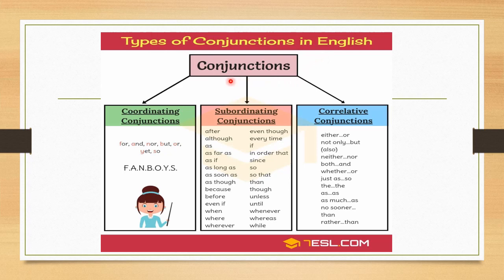The three types of conjunctions in English are: coordinating conjunctions, subordinating conjunctions, and correlative conjunctions. To remember coordinating conjunctions, remember the word FANBOYS — F for 'for', A for 'and', N for 'nor', B for 'but', O for 'or', Y for 'yet', and S for 'so'. So coordinating conjunctions are: for, and, nor, but, or, yet, so.